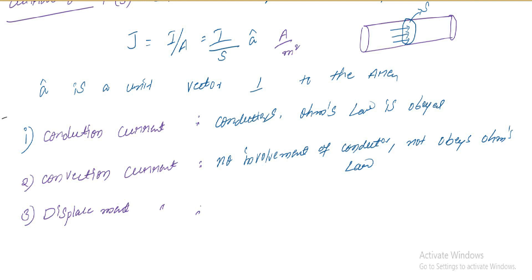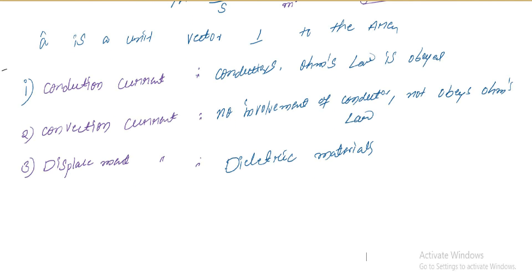Displacement current occurs in dielectric materials. So conduction current occurs in conductors, convection current occurs in insulators, and displacement current occurs in dielectric materials. This displacement current principle is used in the formation of capacitors.